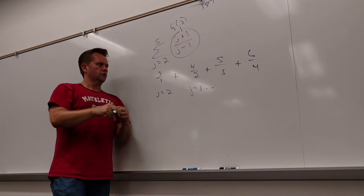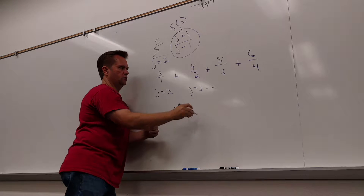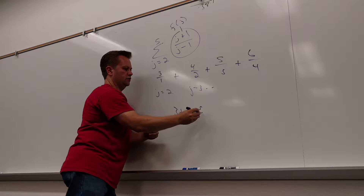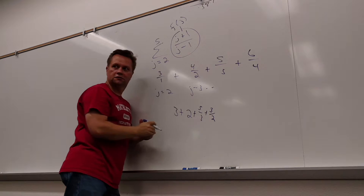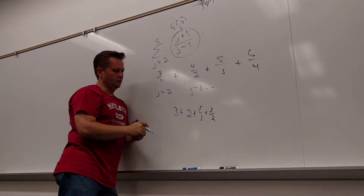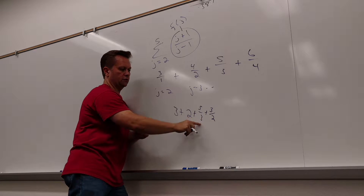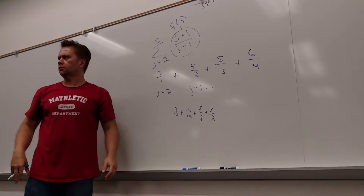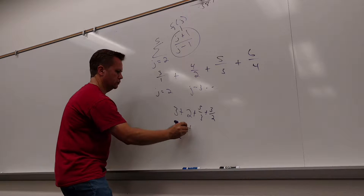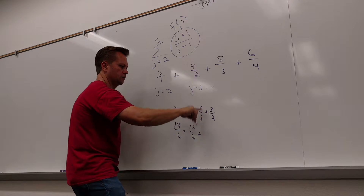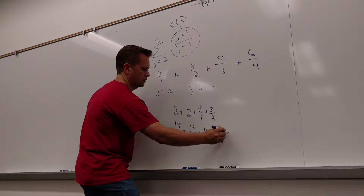Plug a 2 in, plug a 3 in, plug a 4 in, plug a 5 in — now add them all up. So first thing I would look for is: what's 4 divided by 2? 5 divided by 3 I'm not sure I could do that. 6 over 4 is 3 halves. And now you just need the LCD — the LCD is going to be 6. So it'll be 18 over 6 plus 12 over 6 plus 10 over 6 plus 9 over 6.